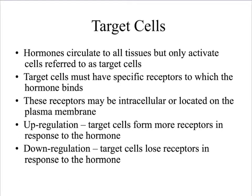Target cells are the cells that a hormone targets. Hormones circulate all throughout the tissue, but they only activate their target cells. You wouldn't want a hormone designed to stimulate reproductive cells to go into your heart and stimulate cells there. The target cells must have specific receptors on them to which that hormone binds. These receptors may be intracellular, meaning they're inside the cell, or they're located on the plasma membrane.